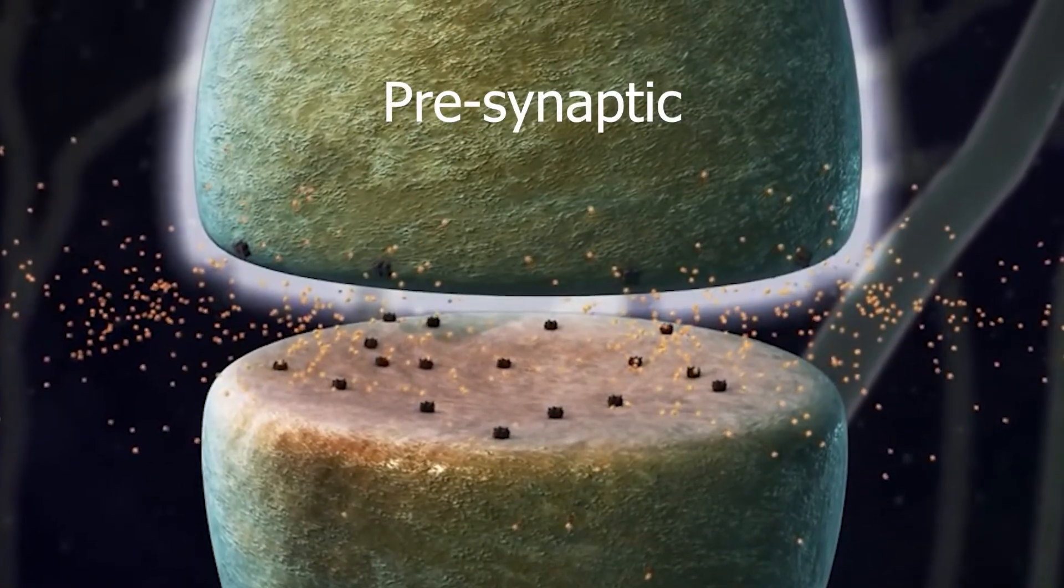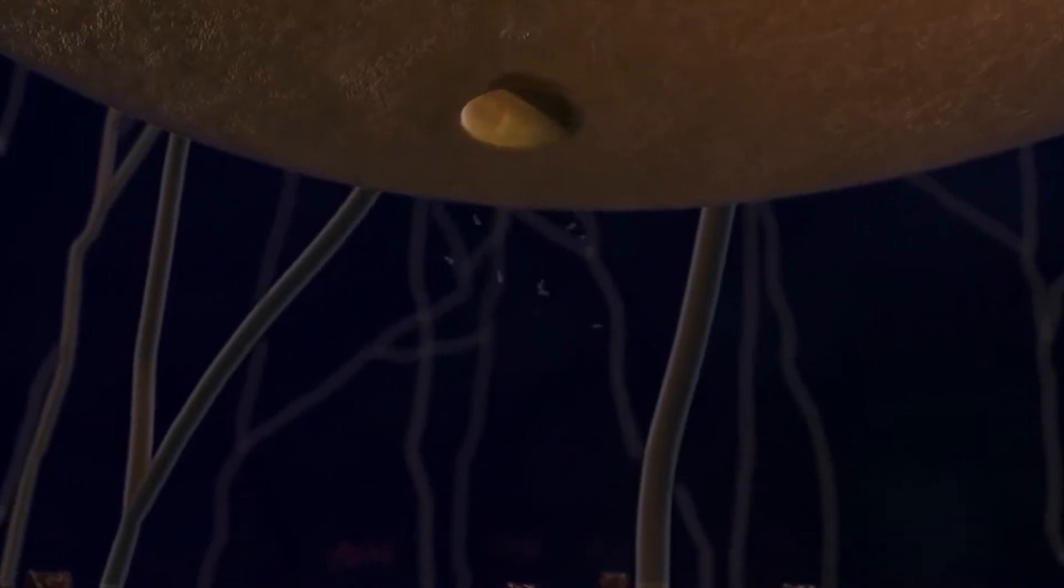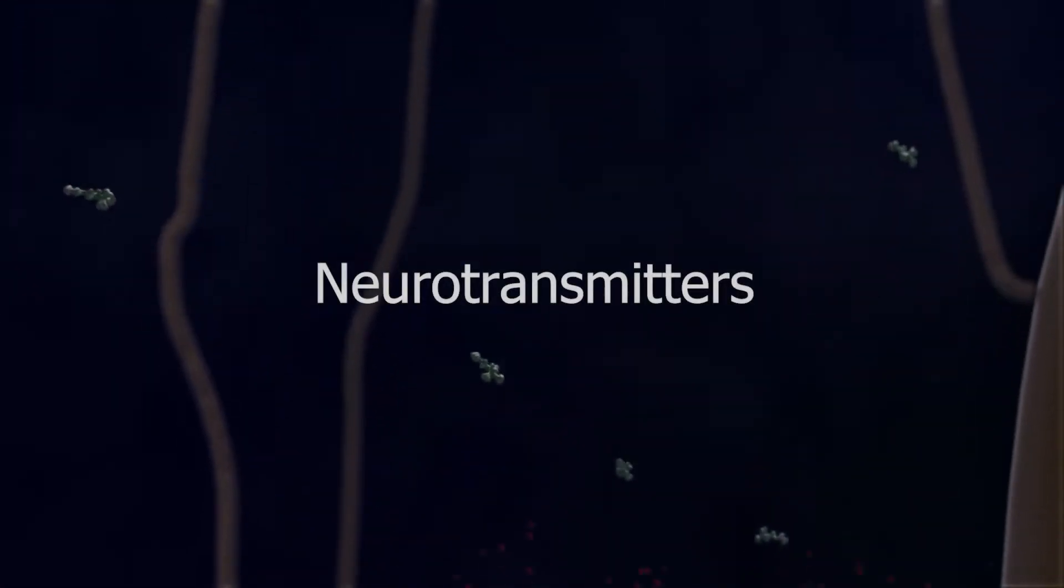So, we call the previous neuron the presynaptic one, and this next one the postsynaptic cell. And because these chemicals transmit a message, they're called neurotransmitters.